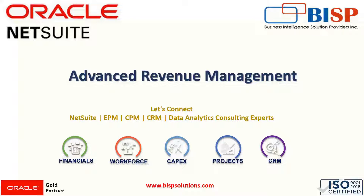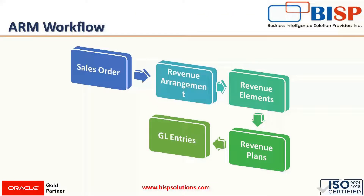When the ARM feature is enabled, revenue for all items is deferred and revenue recognition journal entries are created. There are various source documents in the ARM — Advanced Revenue Management — that can be sales orders, invoices, cash sales, etc.